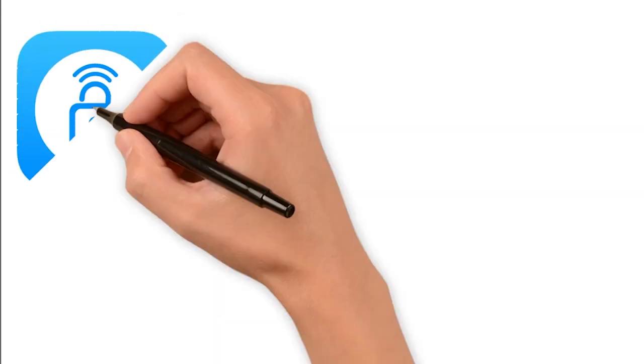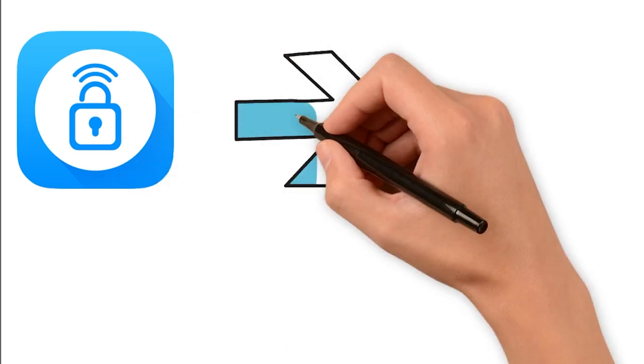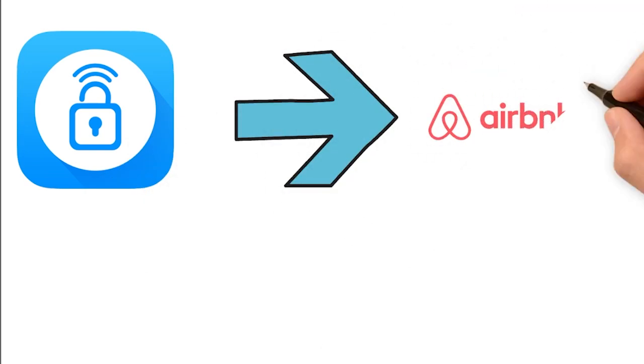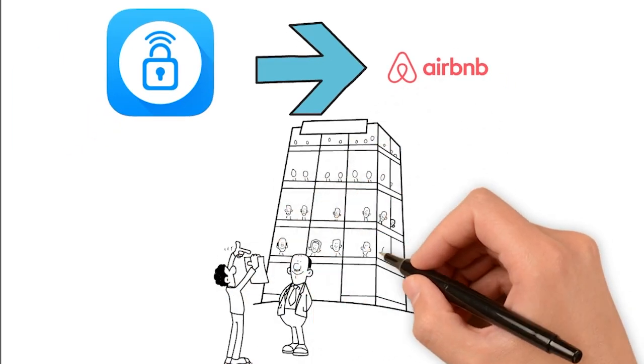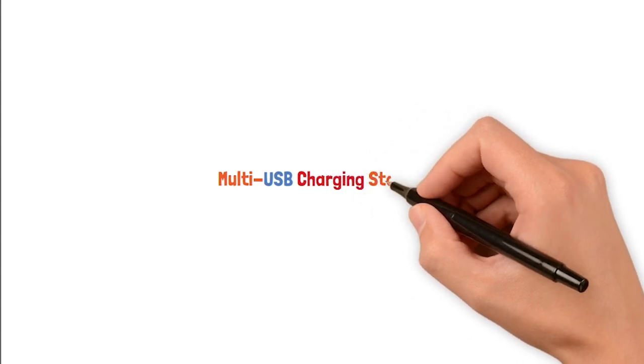Installing a smart lock access is a genius hack that elevates the Airbnb experience of both hosts and guests. It streamlines the check-in process, improves security and adds a modern touch to your listing. Next up, multi-USB charging stations.